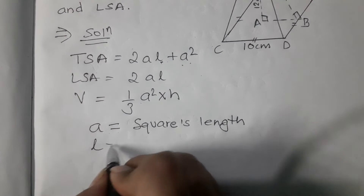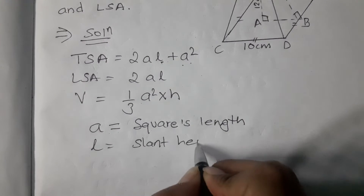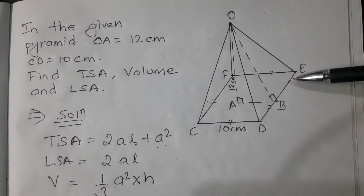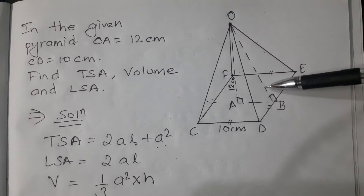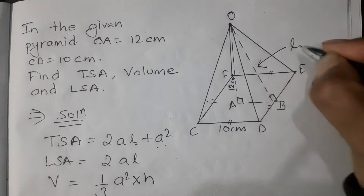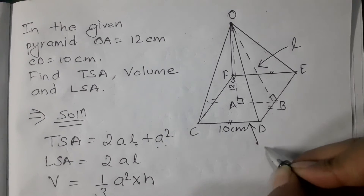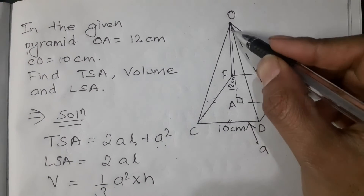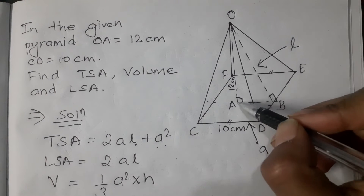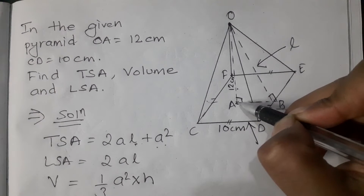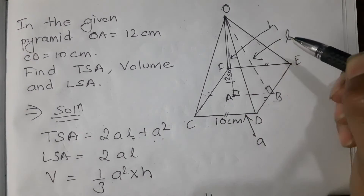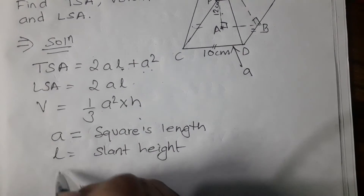L is the slant height of the pyramid. The slant height is the length along the pyramid wall, which is triangular in shape. The triangular shape gives us the slant length. The vertical height is shown as H, using the formula involving A, L, and H.